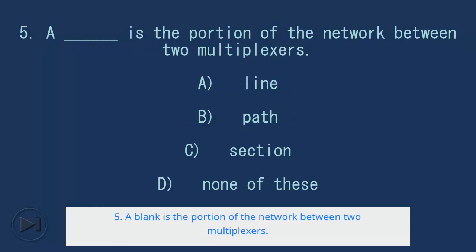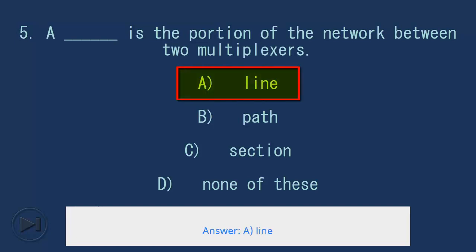5. A blank is the portion of the network between two multiplexers. A. Line, B. Path, C. Section, D. None of these. Answer: A. Line.